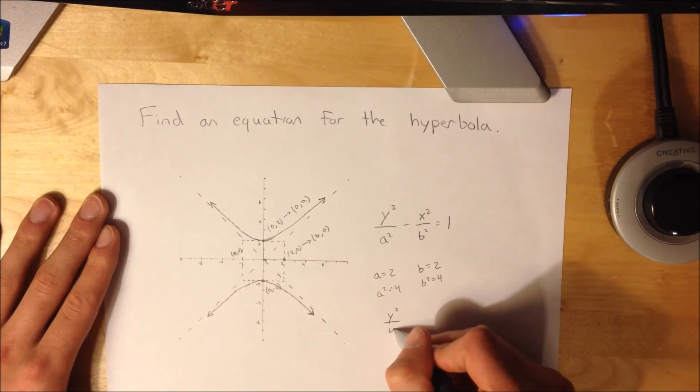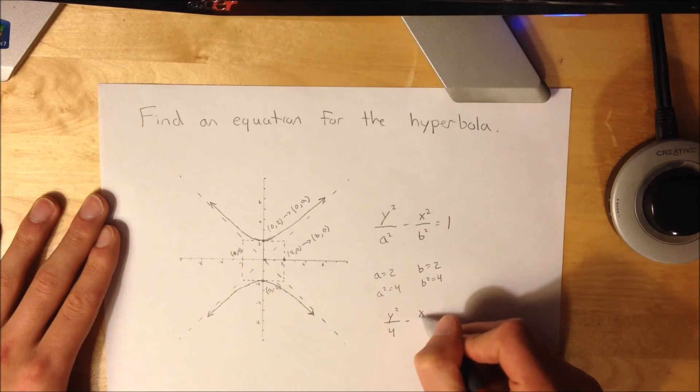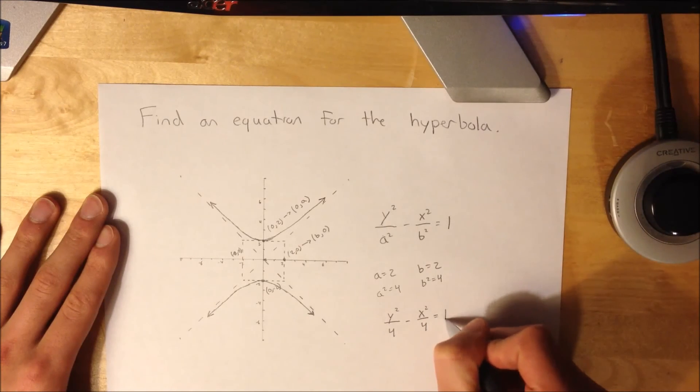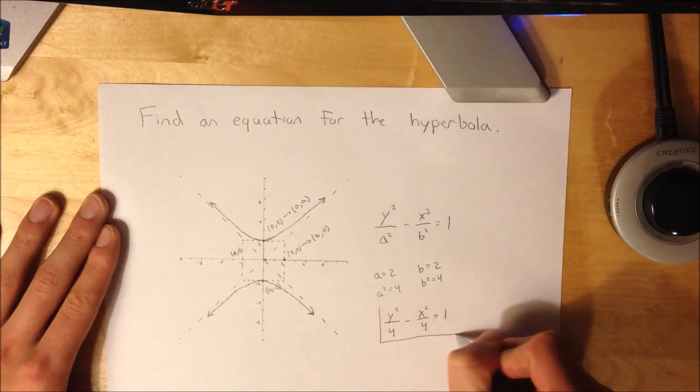So you have y squared over 4 minus x squared over 4 equals 1, and that's it.